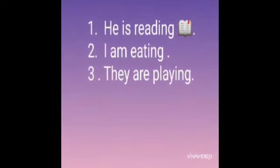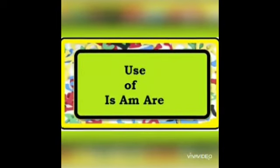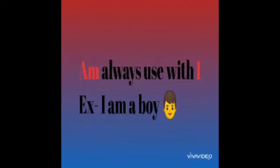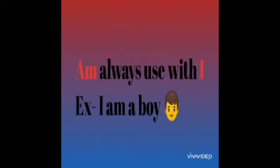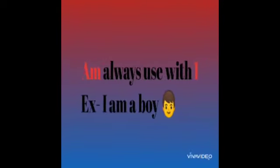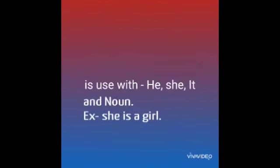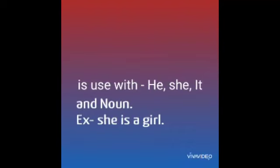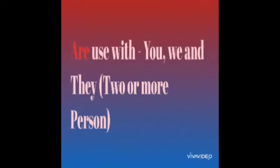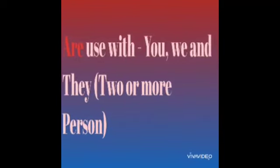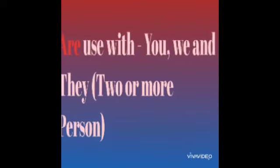Okay, next we will learn how to use Is, Am, Are. Remember, 'am' always use with 'I'. For example, I am a boy. And next, 'is' is used with he, she, it, and noun, means singular person. And 'are' is used with you, we, and they, means it is used with two or more persons.